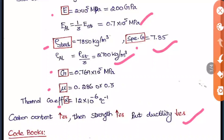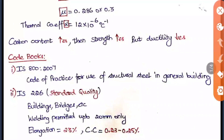There are code books for different types of iron and steel. IS 800-2007 is the code of practice for use of structural steel in general buildings. IS 226 is for standard quality steel used for buildings and bridges; welding is permitted only up to 20 mm, but bolting and riveting can be done for all thicknesses. For IS 226, the elongation is 23% and carbon content is 0.23 to 0.25 percentage.